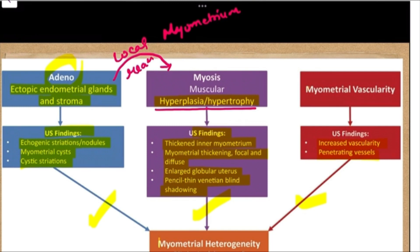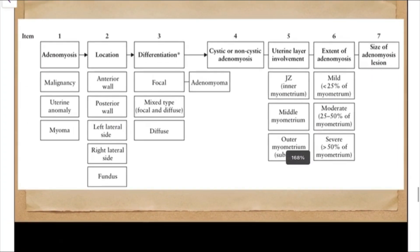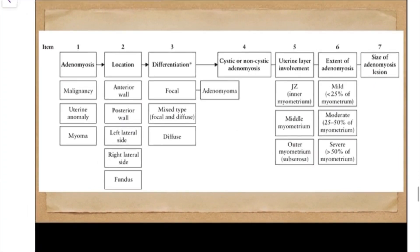Together, all these findings are what we call myometrial heterogeneity or the 'cirrhosis of the uterus.' Once we know this basic pathophysiology, the next thing is the reporting of adenomyosis — and the first and most important investigation is the transvaginal ultrasound.